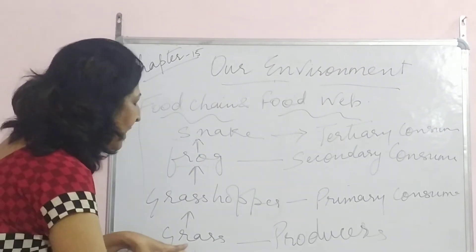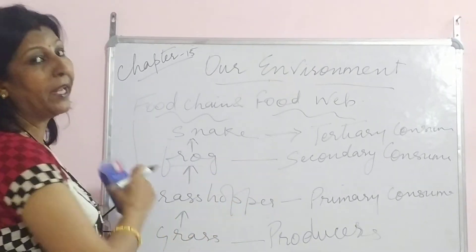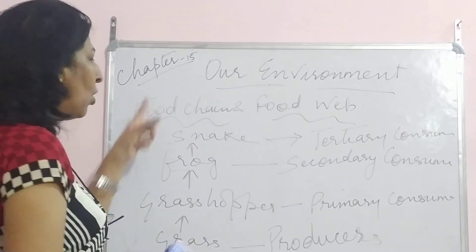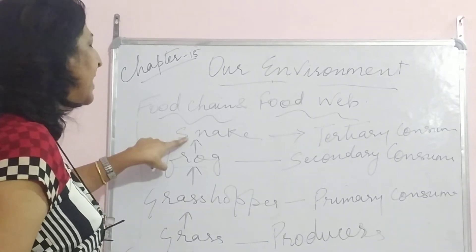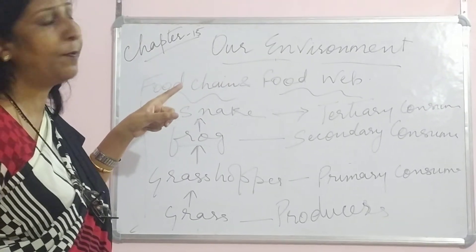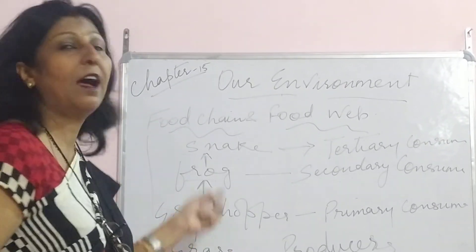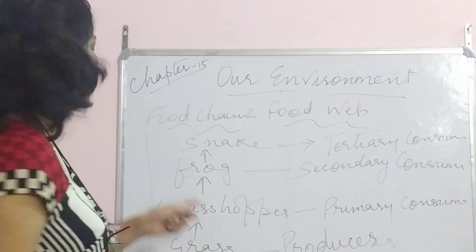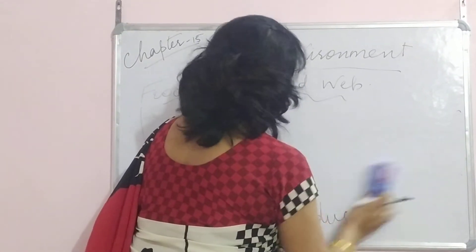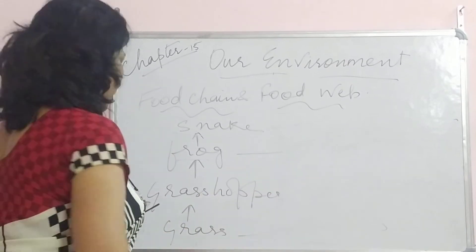So this is a food chain — when we talk about just one organism at each of the levels. For example, if we take grass, then only grasshopper consumes it; we do not show two or three animals eating the grass. When we do that, it becomes a food web. So food chain examples are: grass → grasshopper → frog → snake → decomposers, or grass → deer → tiger → decomposers.